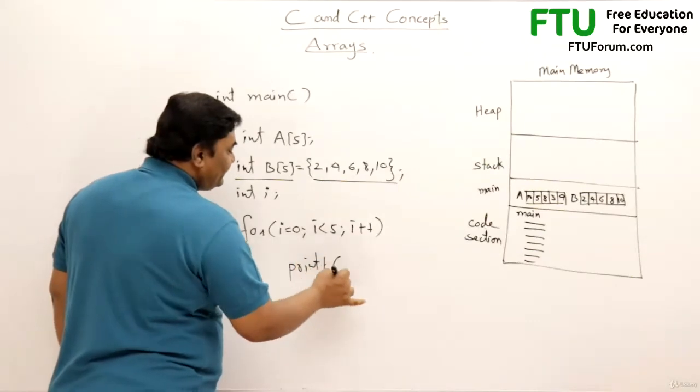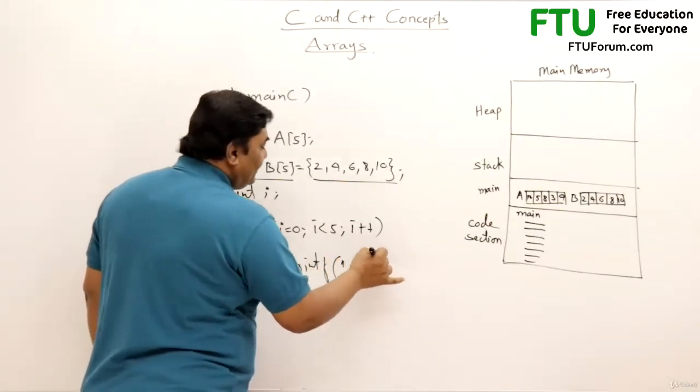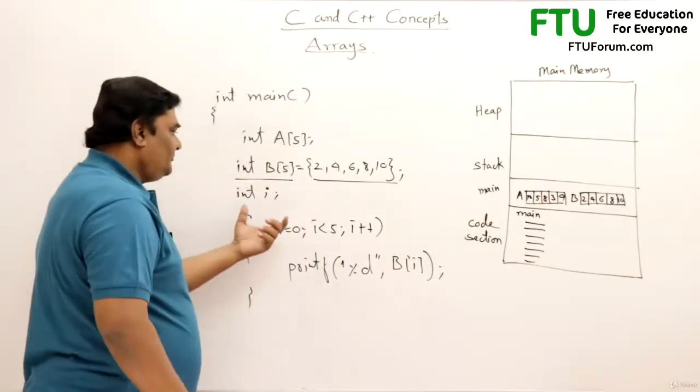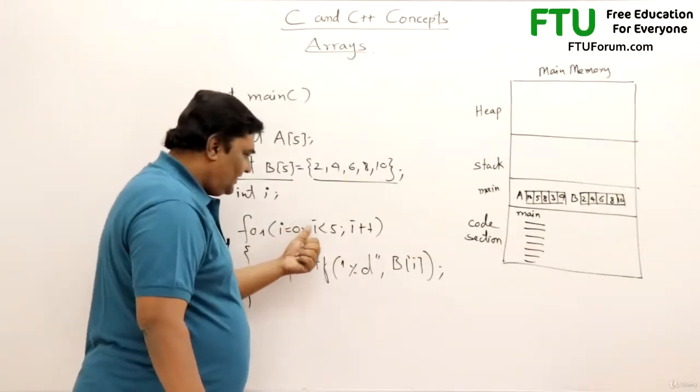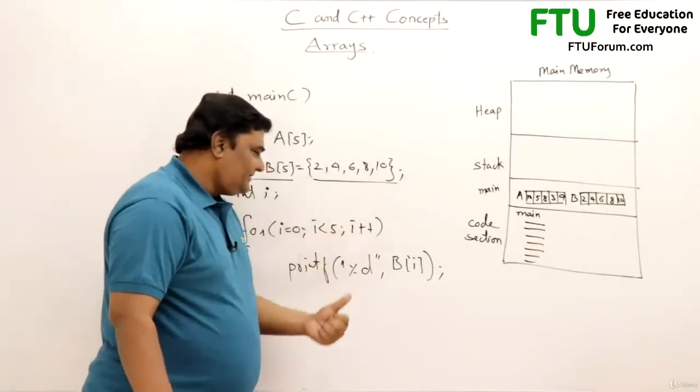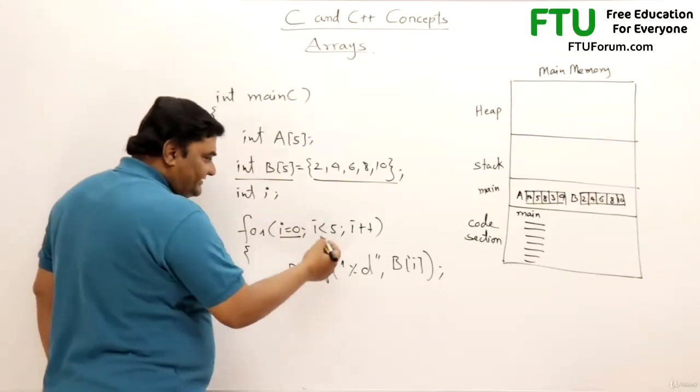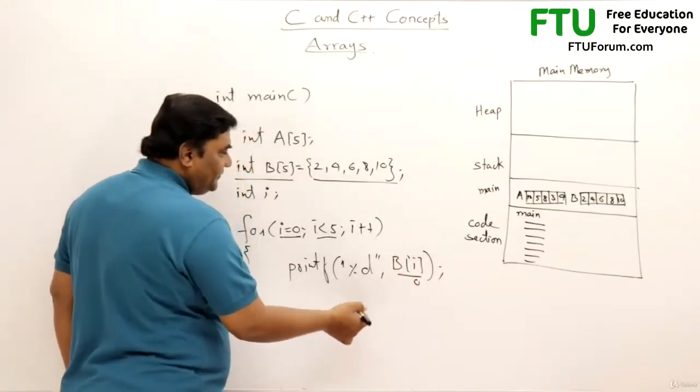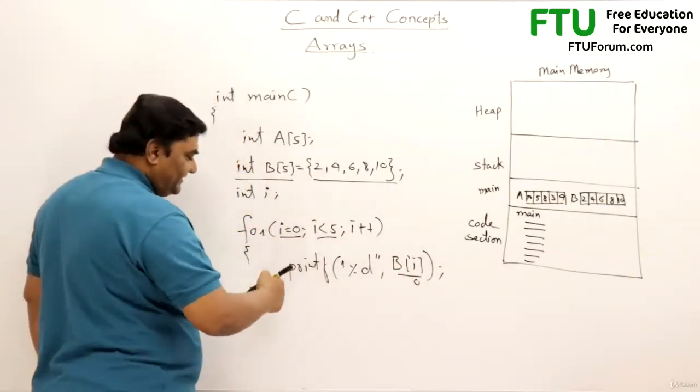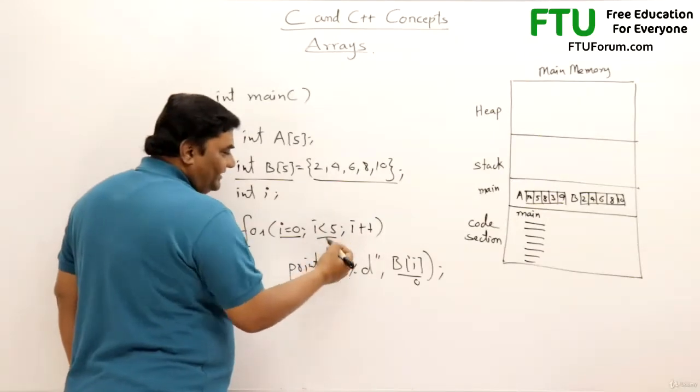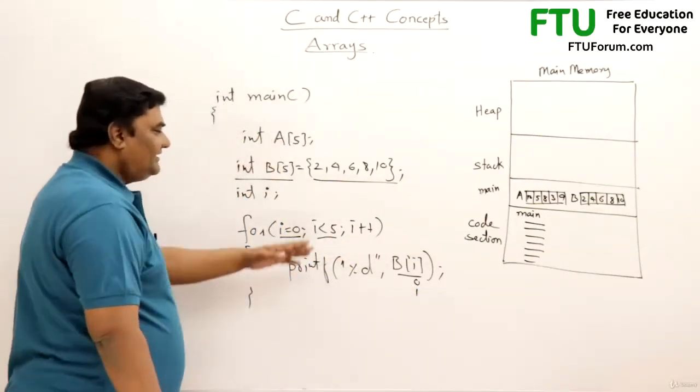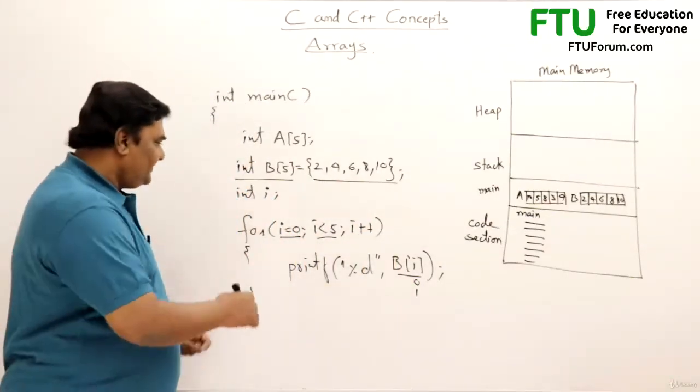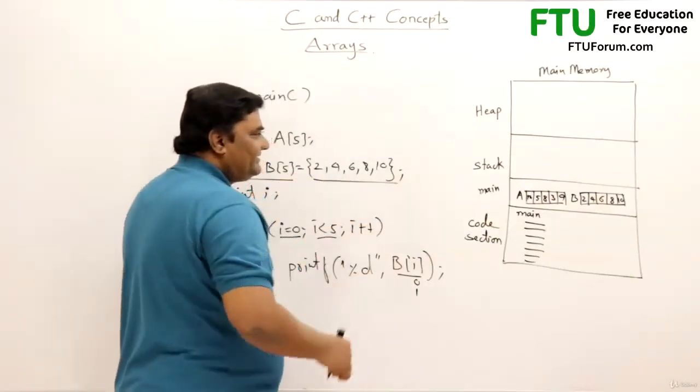So here you must be familiar with the for loop. So i = 0, i < 5, i++. Initially i will be 0, then it checks that i is less than 5, then it will print B[0]. B[0], the element 2 will be printed. The next time i++ i becomes 1, 1 is less than 5 so it will print B[1] and so on up to B[4] it will print all the elements. So for loop is used for scanning through the list of elements in an array.